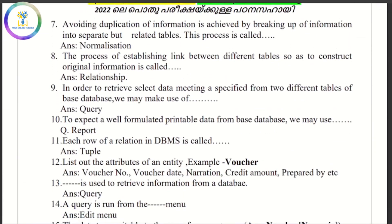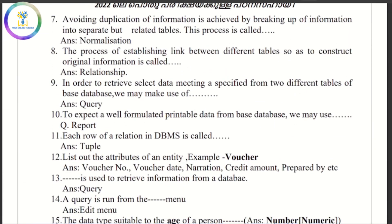Avoiding duplication of information is achieved by breaking up information into separate but relatable tables. This is called Normalization.